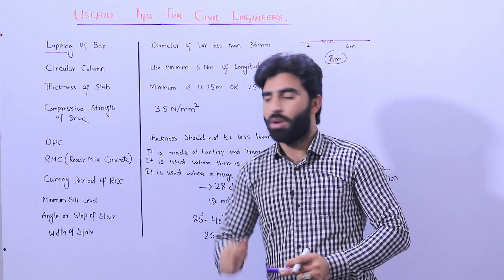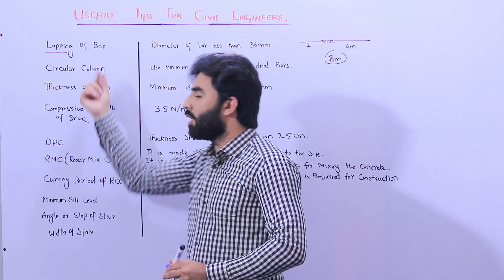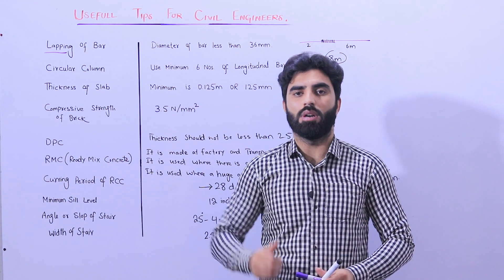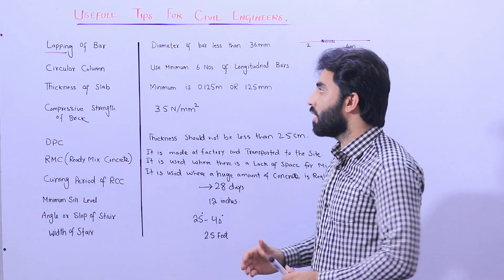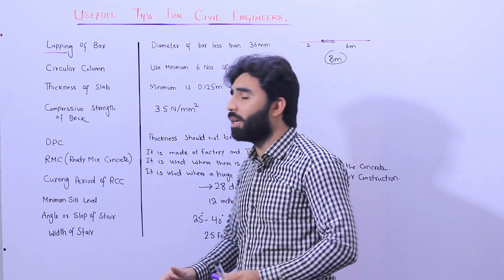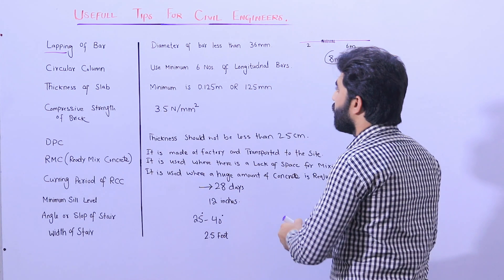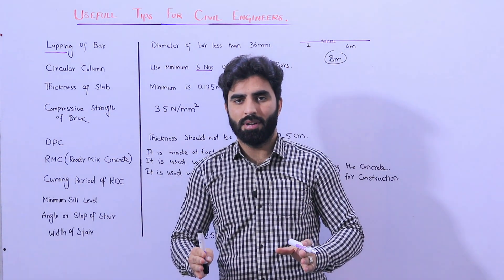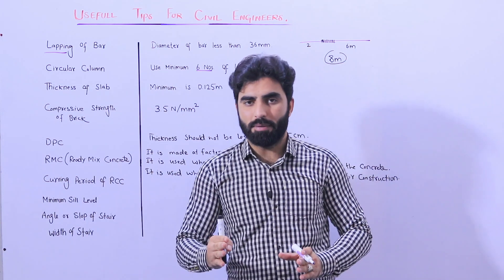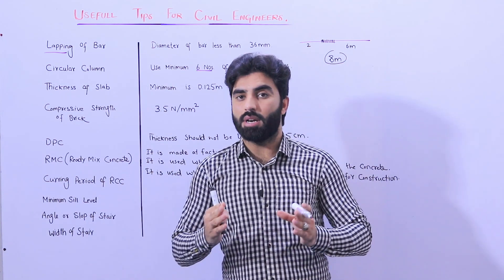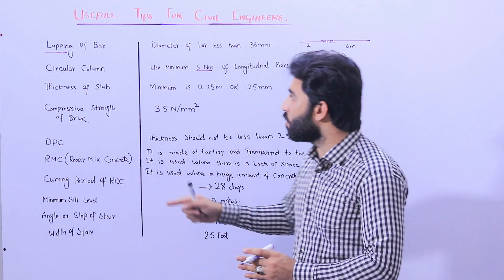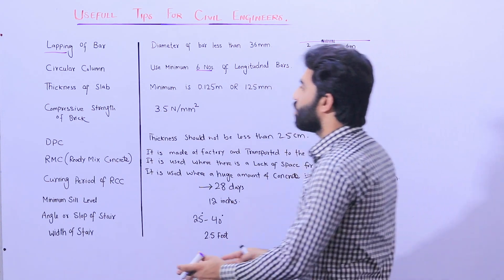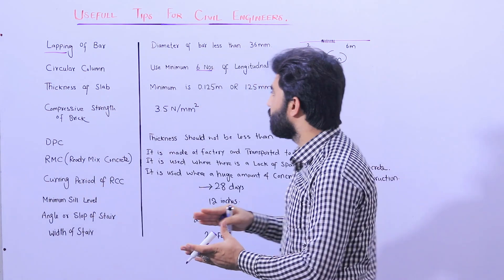The next tip is circular columns. We can make rectangular, square, or circular columns. If you are making construction of a circular column — whether residential or commercial building — use a minimum of six longitudinal bars. For a square or rectangular column, you can use a minimum of four steel rods, but for a circular column it is minimum six.